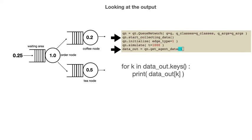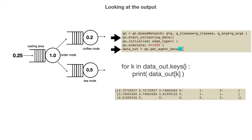For the simulation of the coffee shop, the information we get on one agent using a print command might look something like this. The first three columns all contain times: the first column is the arrival time in the queue, the second column is the agent's enter service time, and the third column is the agent's departure time. The fourth column tells you the length of the queue when the agent arrived, and the fifth column contains the total number of agents including the one who just arrived. The last column is particularly interesting in a network of queues, as it provides information about how the agent moved through the network.